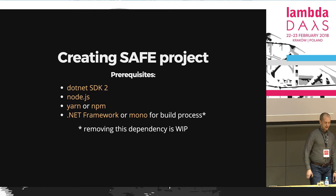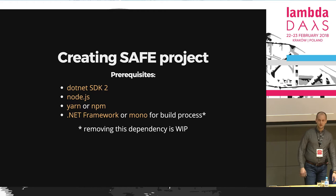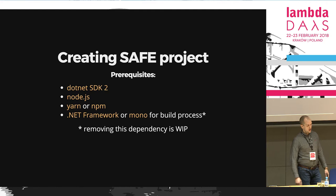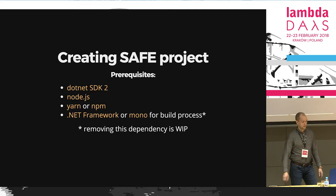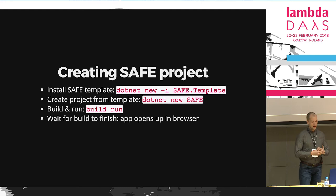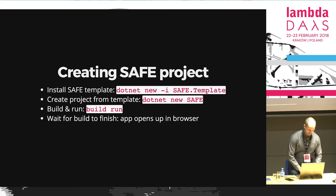Let's see how to create Safe projects from scratch. You will need to have .NET SDK version 2, which is a cross-platform tool. For the front-end stuff, you need Node.js and a package manager, either Yarn or NPM. For the moment, you also need .NET Framework on Windows or Mono on Mac or Linux for the build process, but the open source community is working on removing that dependency. In practice, we install the Safe template using the dotnet new command, then trigger the build process and wait until the app opens in the browser.